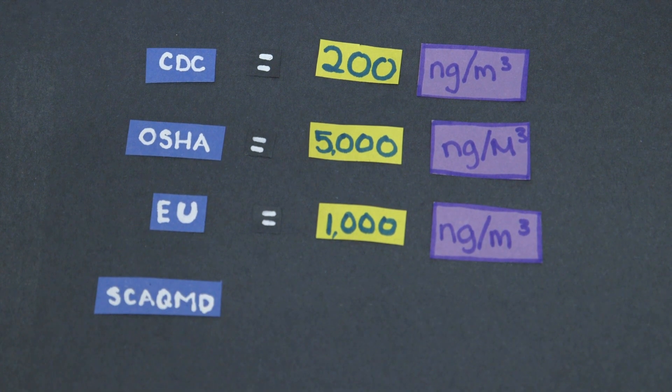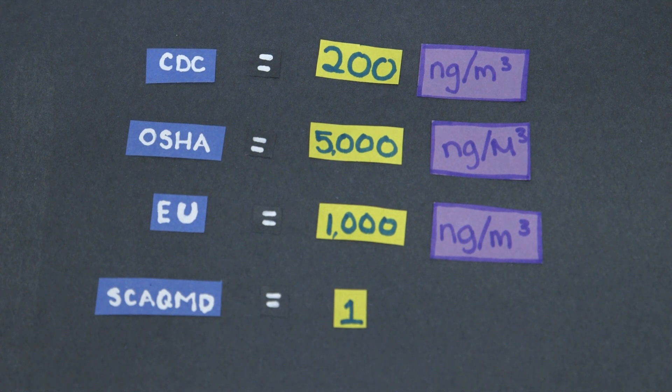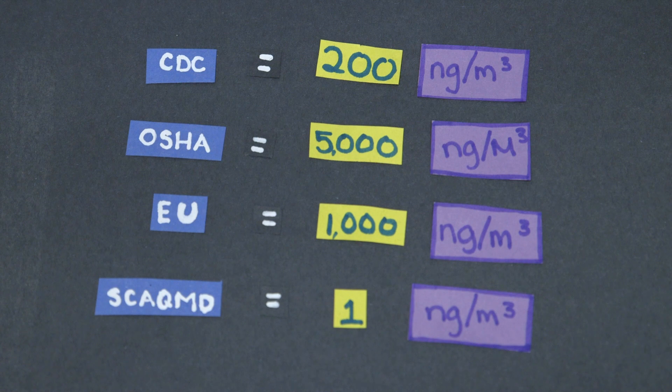Yet, the South Coast Air Quality Management District is trying to limit the amount of hexavalent chromium per cubic meter to just one nanogram.